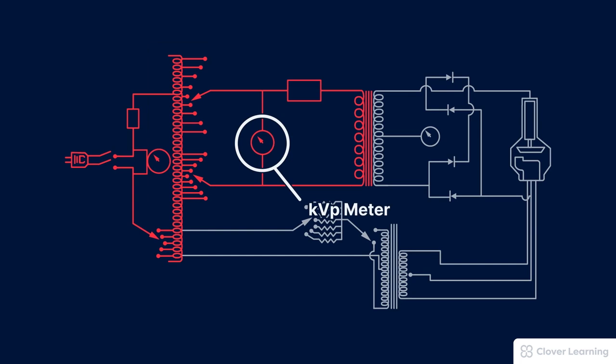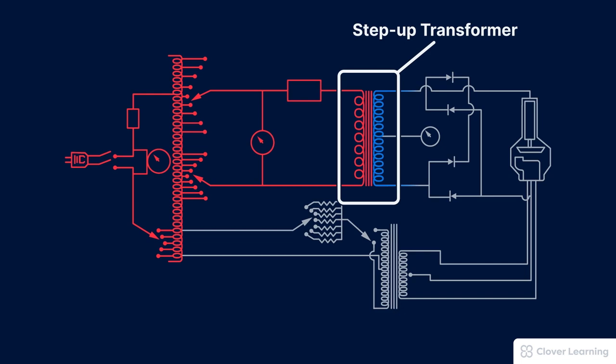Also in this part of the circuit is the KVP meter. Included in this part of the circuit is the exposure timer. And lastly, the final part of the primary circuit is the step-up transformer that changes the electricity from volts to kilovolts.